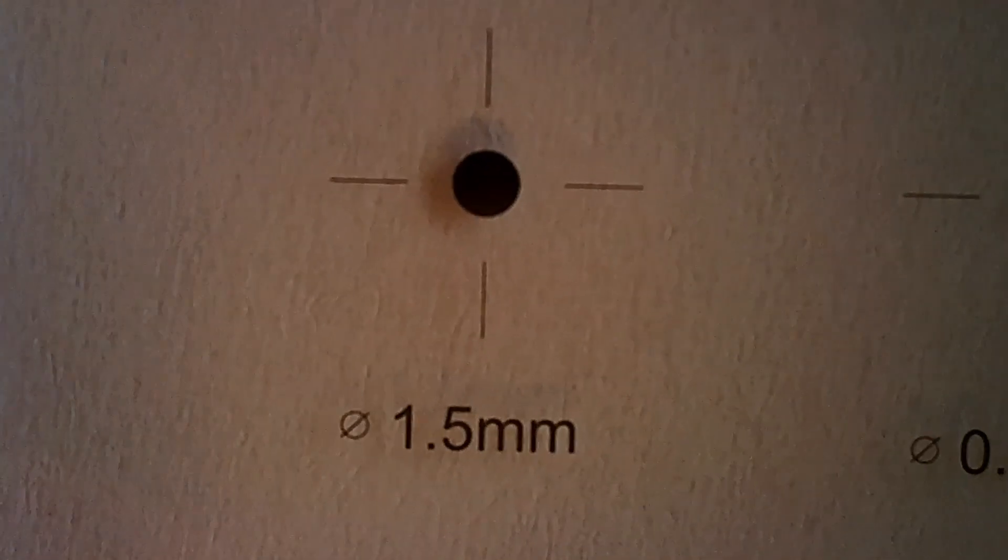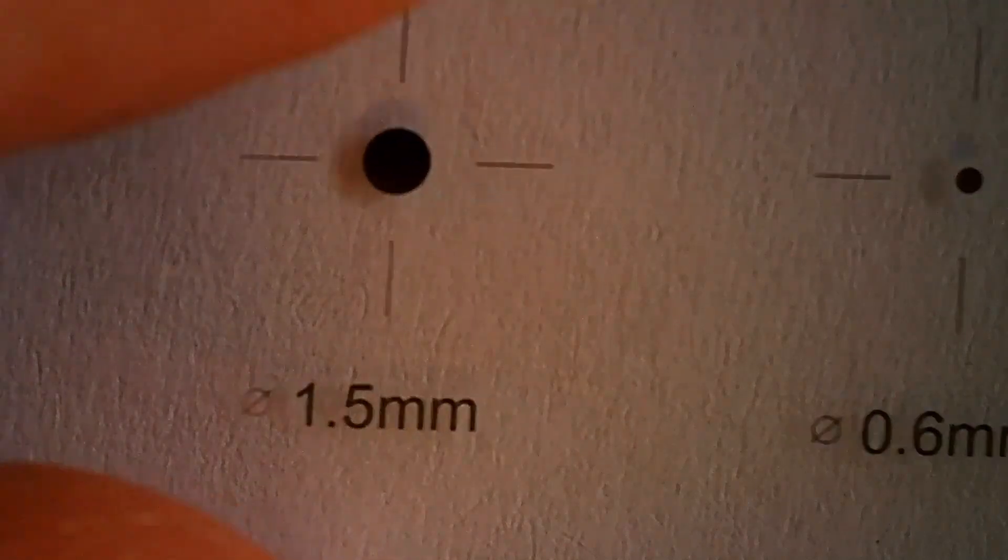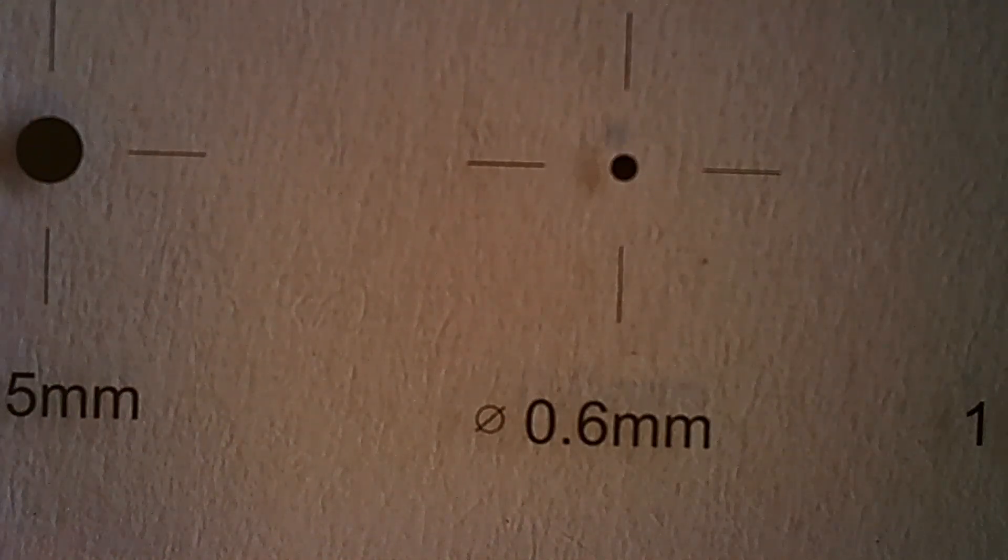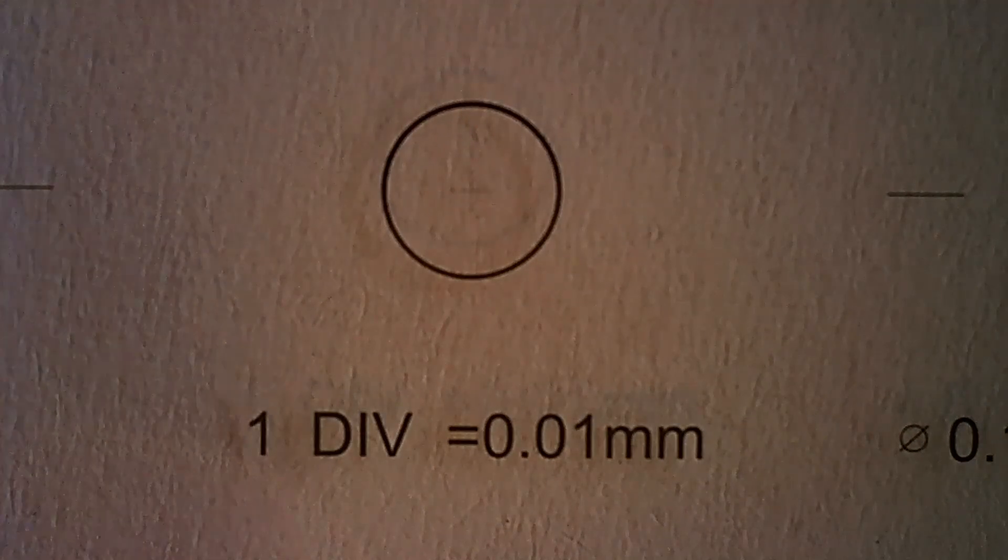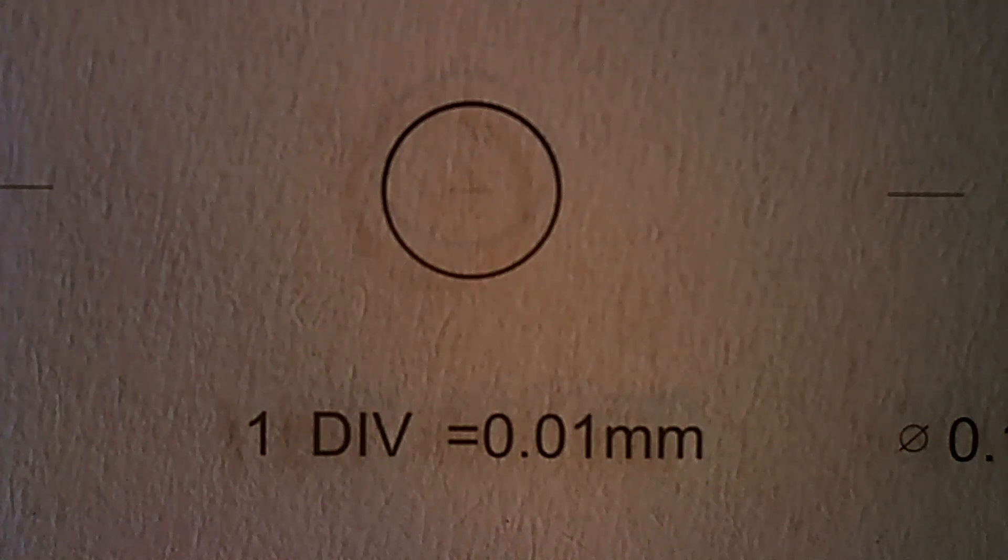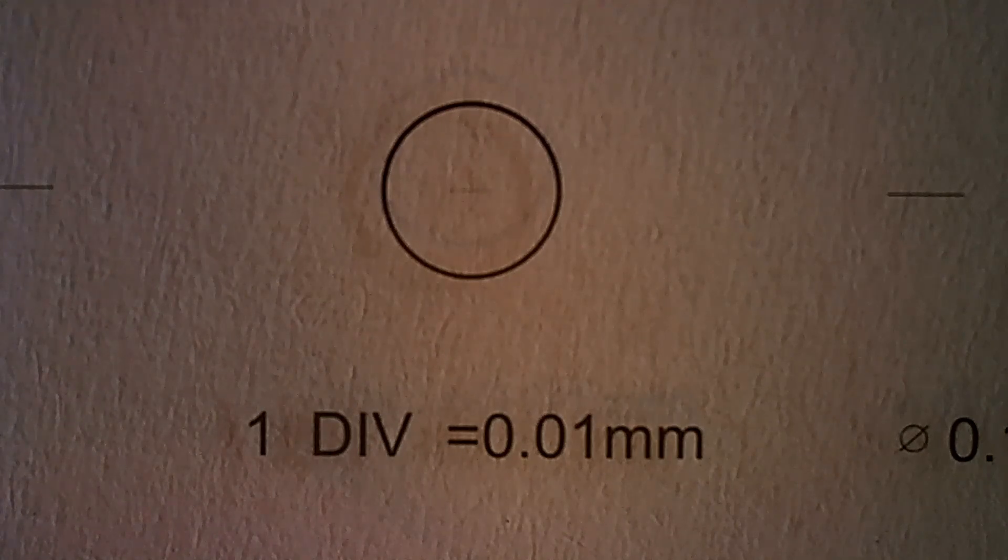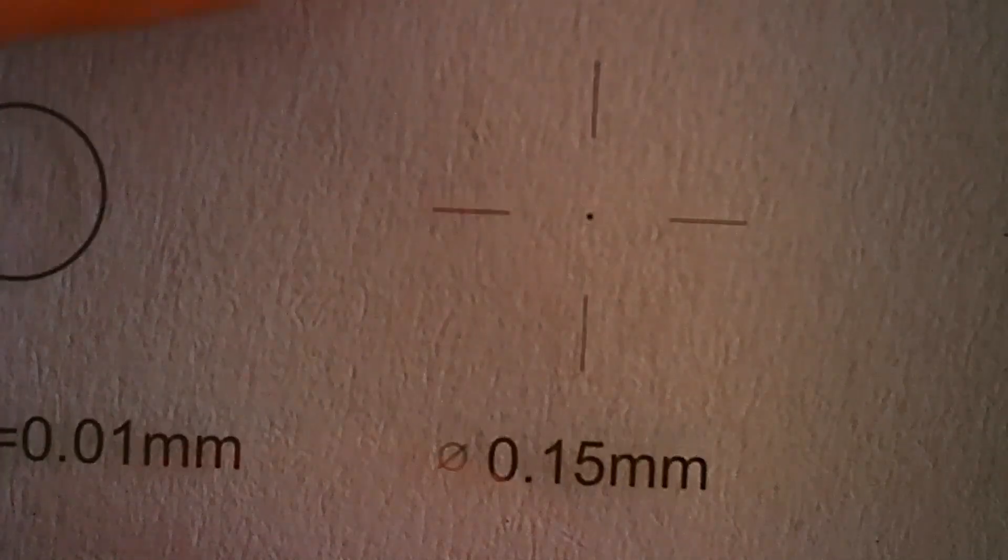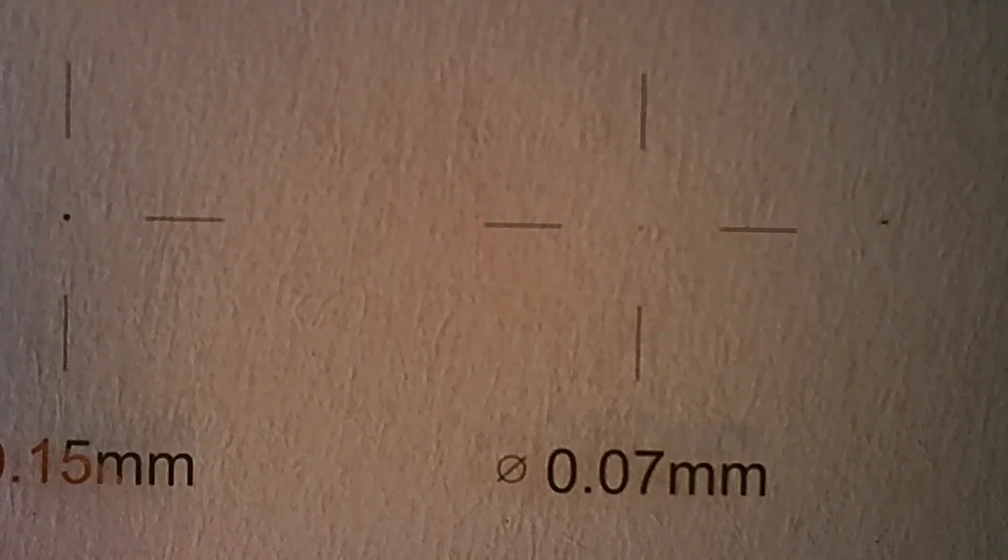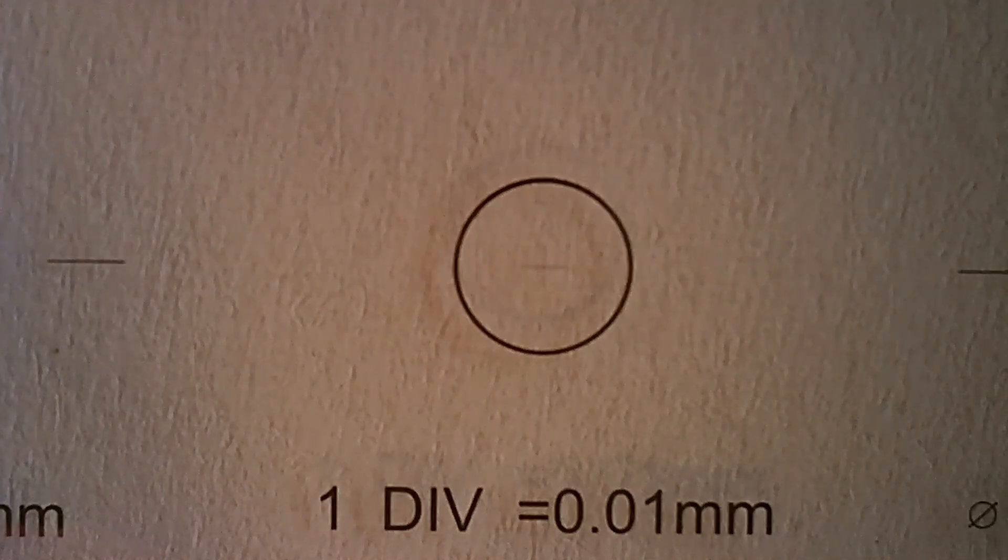So this is the 1.5 millimeter calibration point, this is 0.6 millimeters, and this is the ruler I will take a closer look later because even on this stage on this zoom I cannot see the ruler. This is 0.15 millimeter point and this is the 0.07.